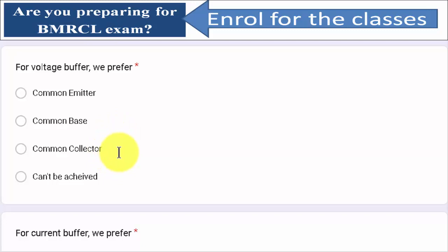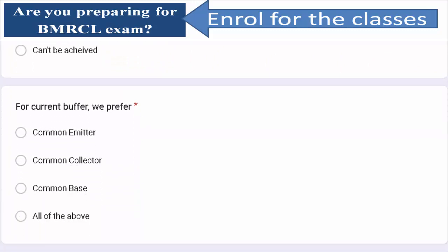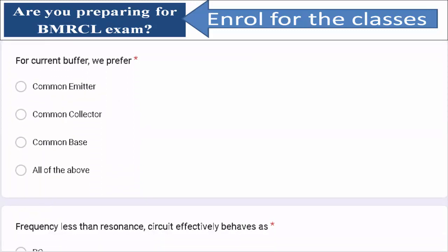Why common collector? Because voltage gain is approximately equal to 1, input impedance is more, and output impedance is less. So these are the voltage buffer characteristics of the common collector configuration. Next question.